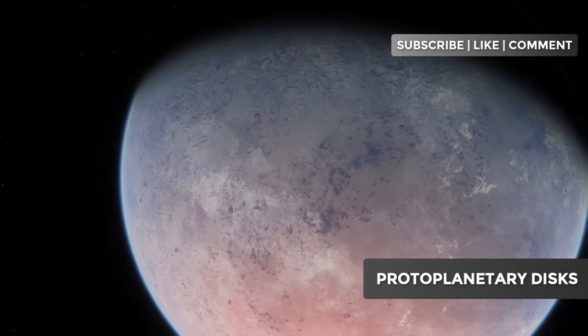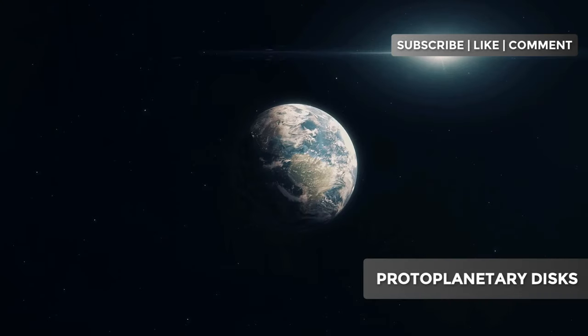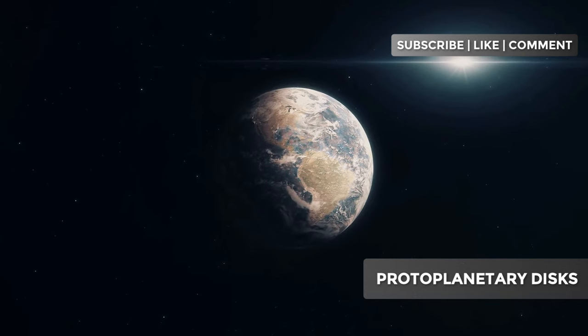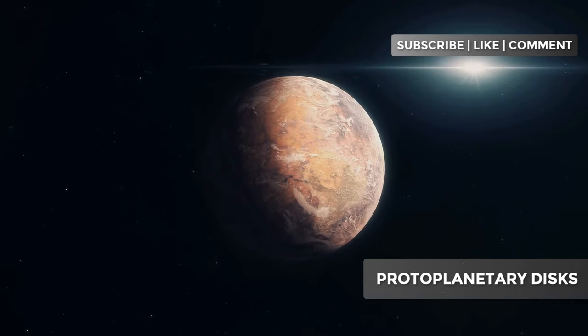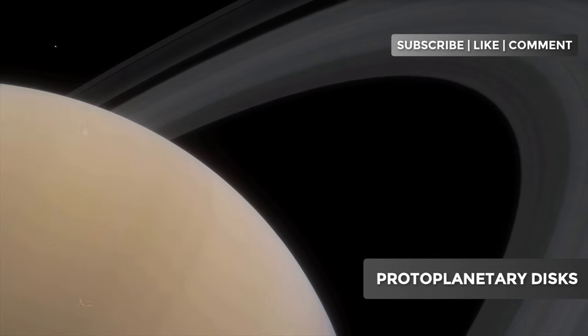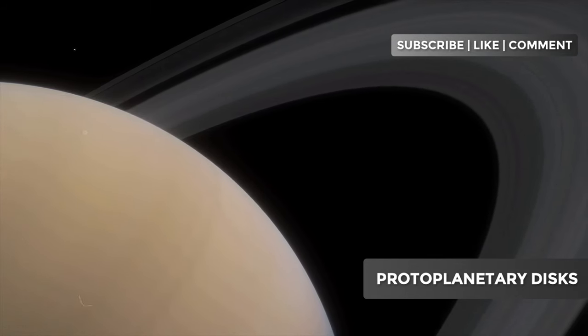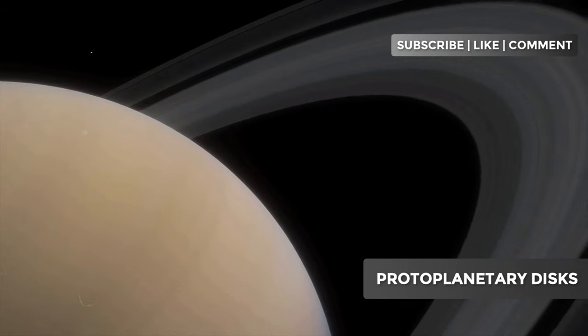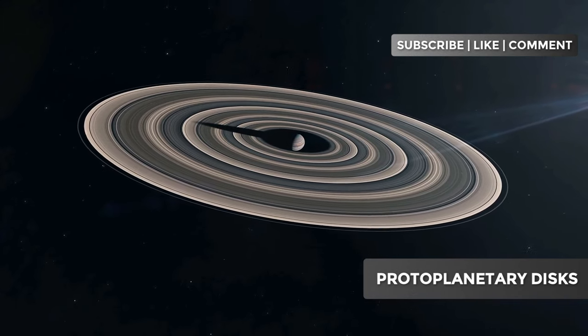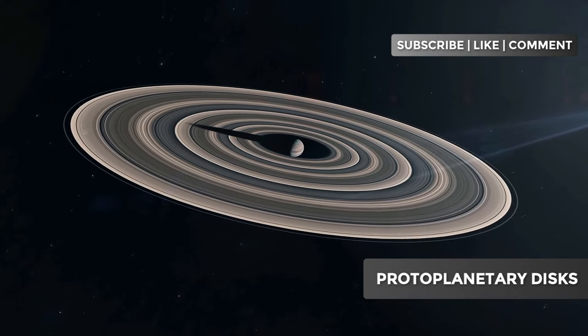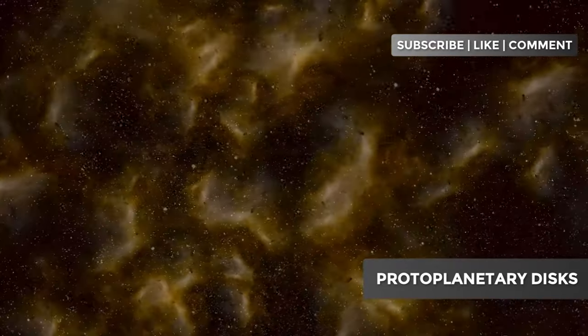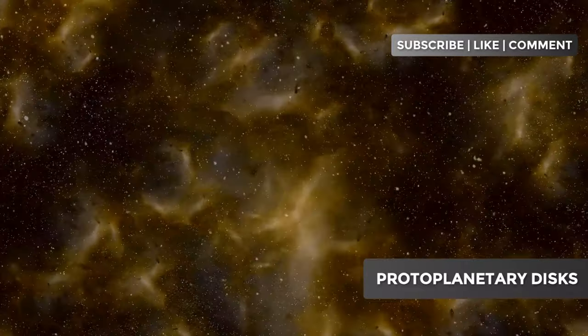Another fascinating disk is the one surrounding the star TW Hydrae. This system is particularly interesting because it is relatively close, only 175 light-years away, and is oriented face on to Earth, offering a clear view of its structure. Detailed observations have revealed multiple rings and gaps, including one at the distance where water would freeze, potentially an ideal location for the formation of habitable planets. The disk around the star Beta Pictoris is also noteworthy. This system, in addition to a prominent disk, hosts at least two giant planets that have been directly imaged. The interaction between these planets and the disk offers a natural laboratory for studying the dynamics of planetary formation and evolution.